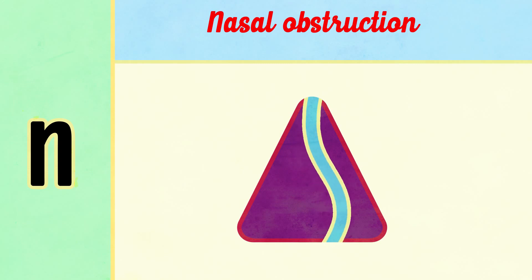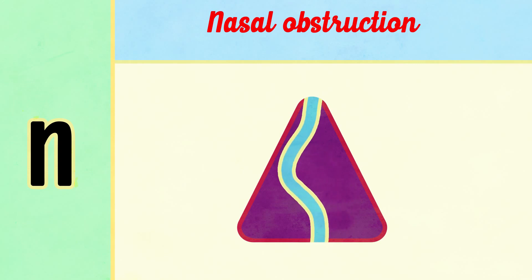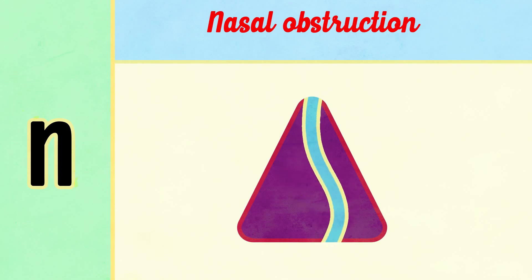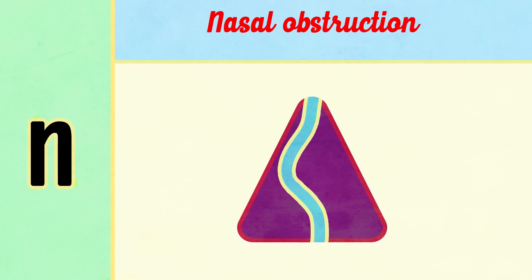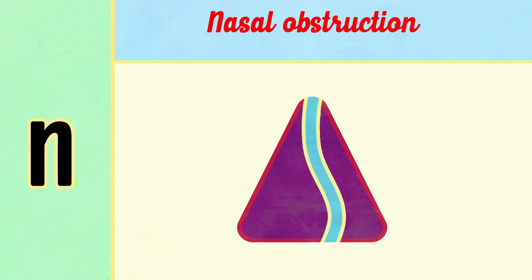N is for nasal obstruction. Naturally, any deviation in the nasal septum causes less nasal space and results in nasal obstruction on the side of the DNS.